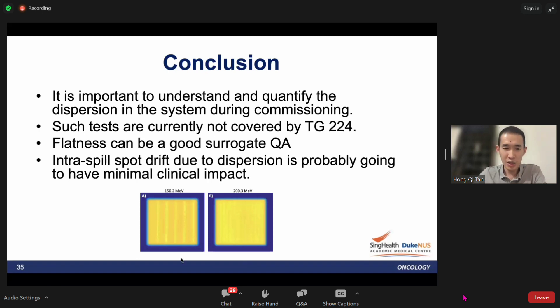As mentioned, flatness can be a good surrogate QA. At the start, when the beam was not very flat with dispersion and spot position drift during the spill, we got spot profiles that looked pretty bad. You can use this to gauge the intra-spill spot position deviation, but it's not a quantitative way to measure dispersion or spot position deviation.